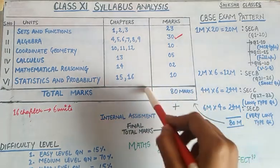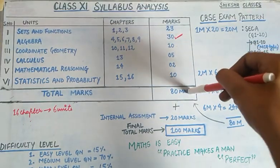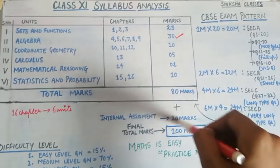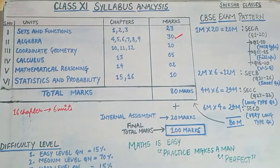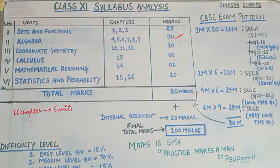So the total paper is 80 marks, out of which 20 marks are for internal assessment, making the total final marks 100. The paper will be of 80 marks plus 20 marks internal assessment, totaling 100 marks.